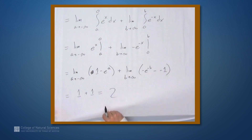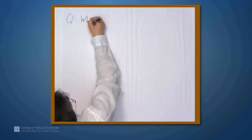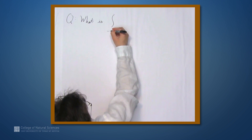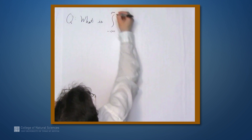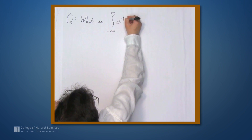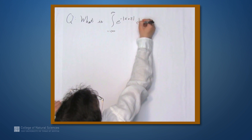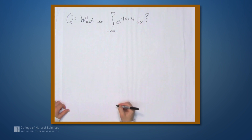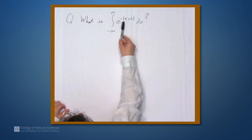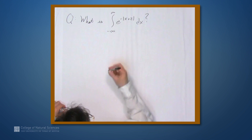I'll leave you with a question: what is the integral from negative infinity to infinity of e to the negative absolute value of x plus 2 dx? As a hint, think about what value you want to split at, based on the fact that you have absolute value of x plus 2 in the exponent of e.